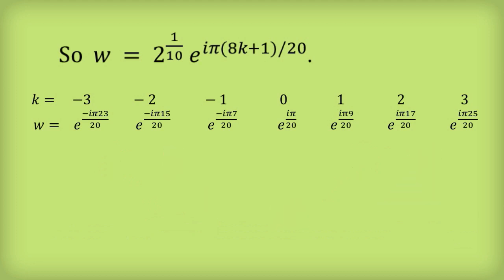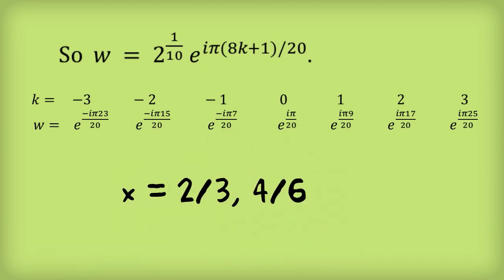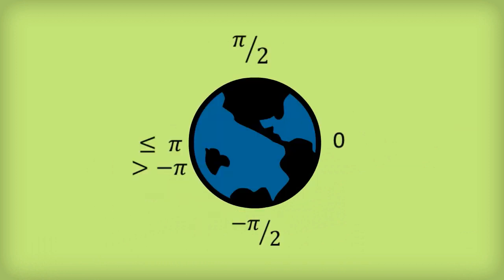Just as in high school you wouldn't write x equals 2 thirds comma 4 sixths because they're the same thing, here we're not going to write down the same complex number twice. So the question is: how do we work out which ones of these to pick and which ones to ignore?